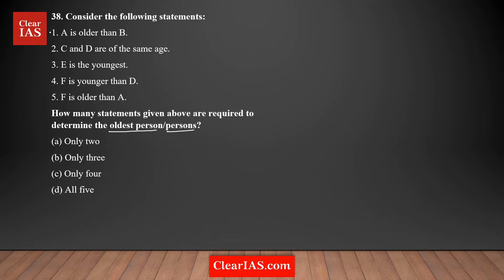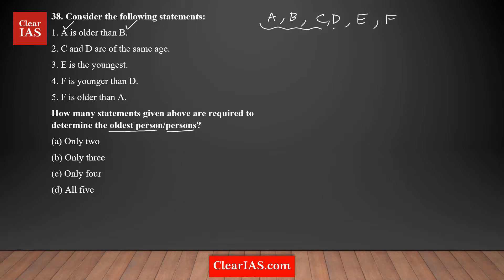You need to analyze the five statements and list down how many people there are. You can see A and B — two people. Then C and D, then E, then F. D and A are already covered, so there are a total of six people. These five statements are about six people.